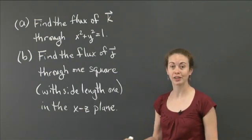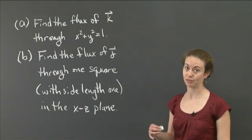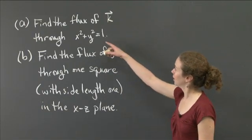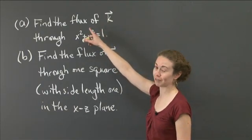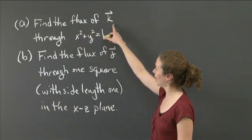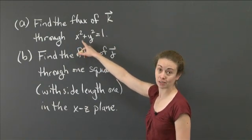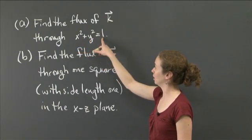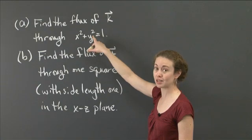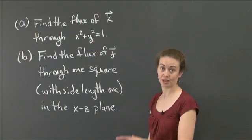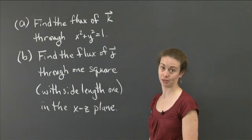We're going to see if we can figure out how to do these problems without doing a lot of computation. So the first one is to find the flux of the vector k through the infinite cylinder x squared plus y squared equals 1. So notice this doesn't depend on z, but in fact at every height it is a unit circle, so it's an infinite cylinder.